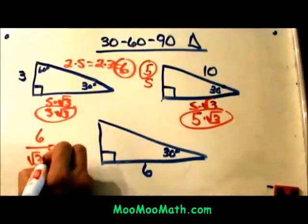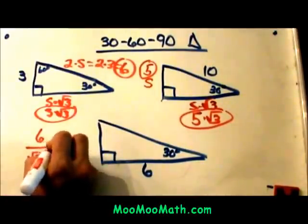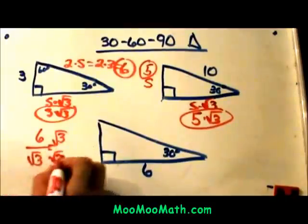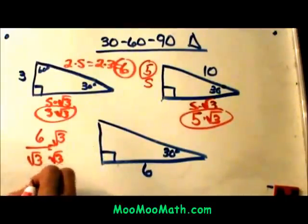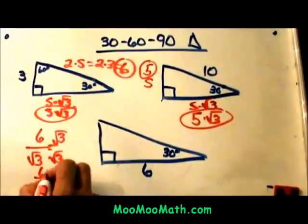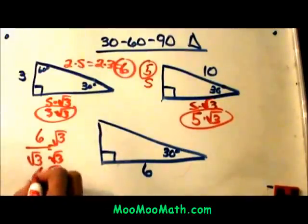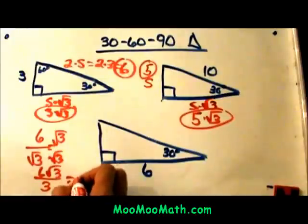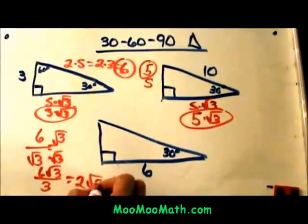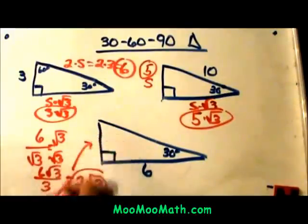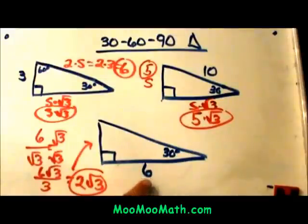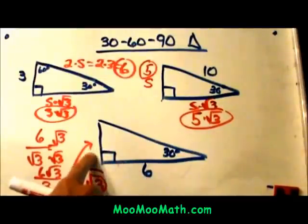To rationalize that I multiply the bottom by root of 3. I multiply the top by root of 3. Square root of 3 times square root of 3 is just 3. So I have 6 square root of 3 over 3 and the coefficients divide. So I have 2 square roots of 3. So that is the length of my short leg and you always have to go from the long leg to the short leg first.